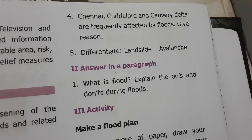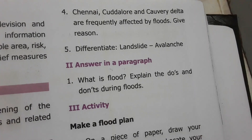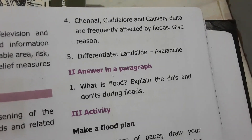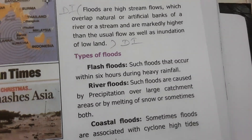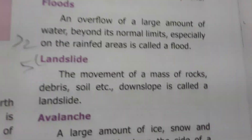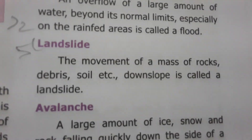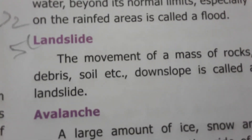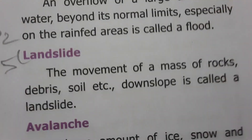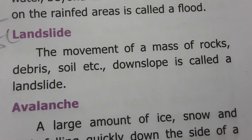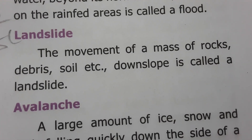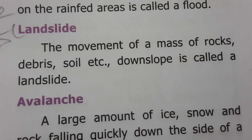Question 5: Differentiate landslide and avalanche. The movement of mass of rocks, debris, and soil downslope is called a landslide.